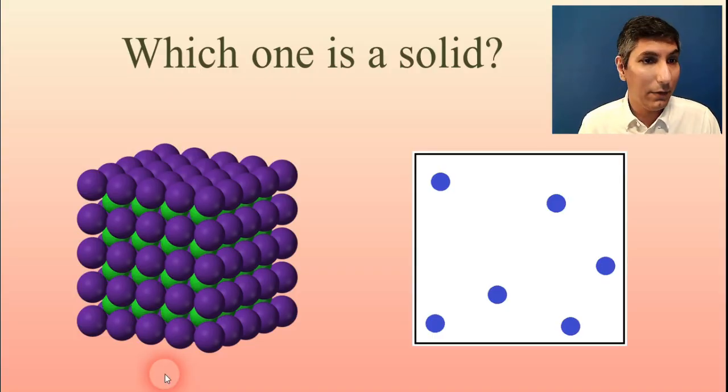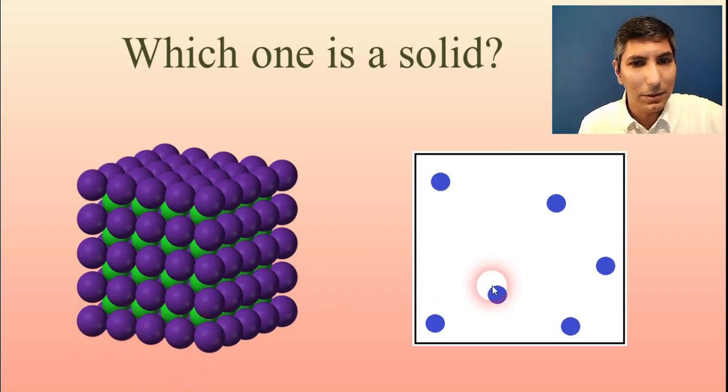We also know that we have this nice, orderly, crystalline pattern. That's a good sign of a solid as well. Whereas we just don't have that in the picture here on the right.